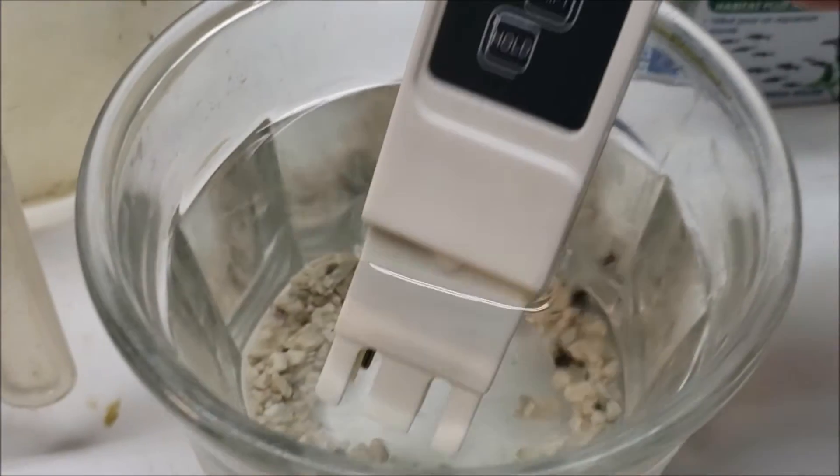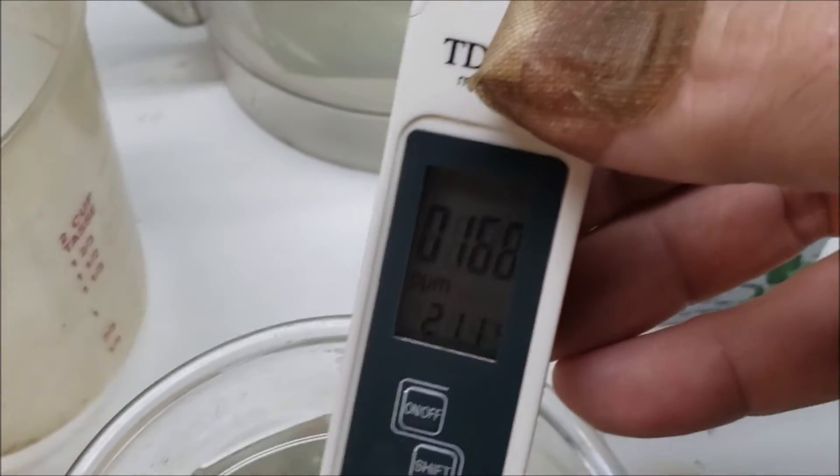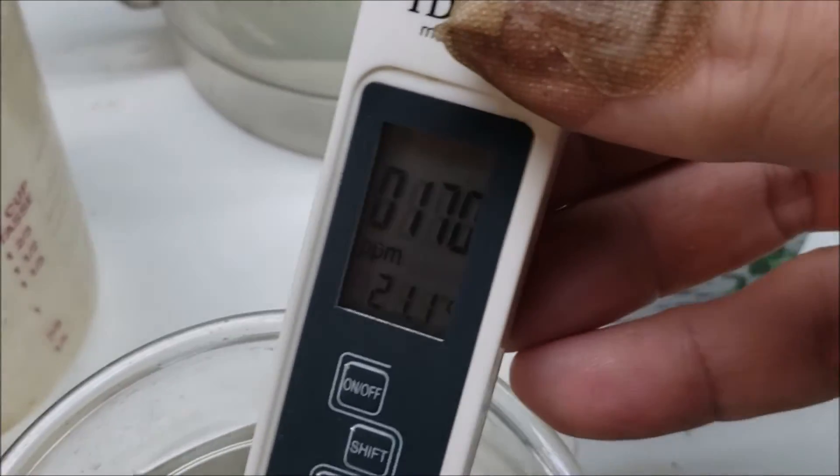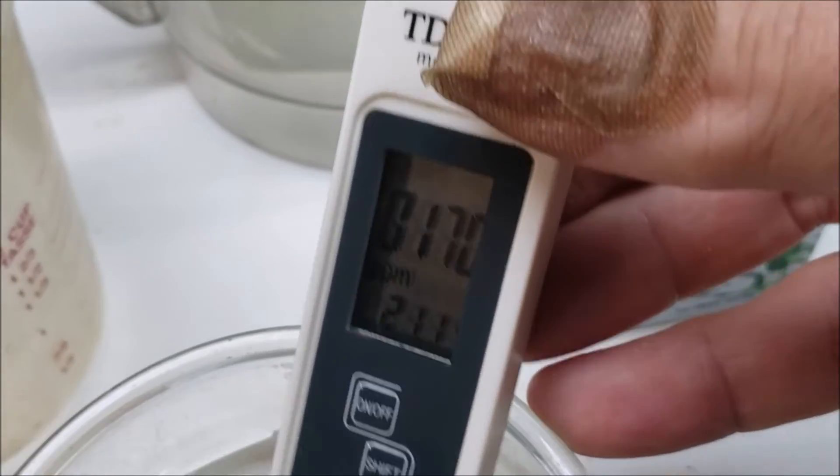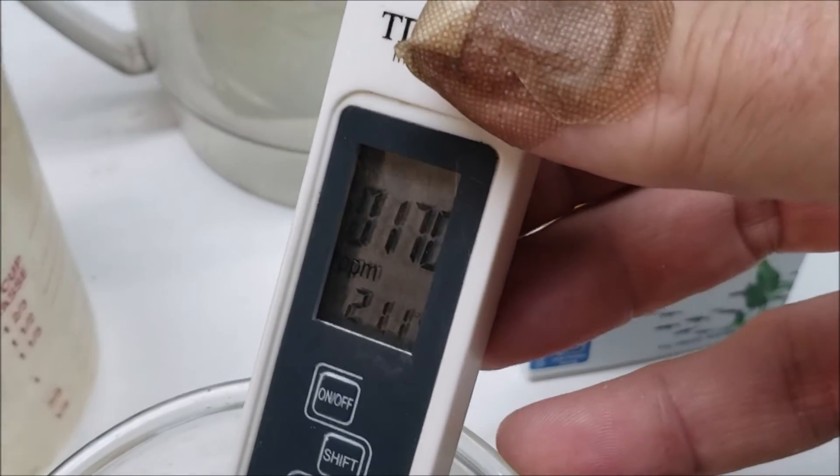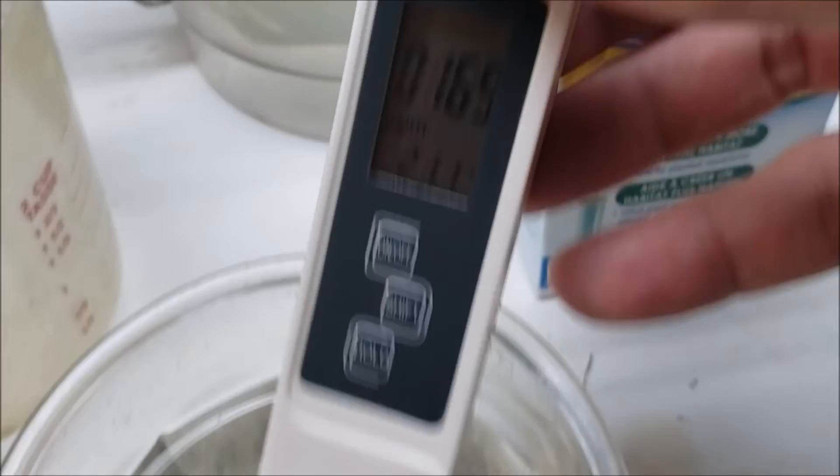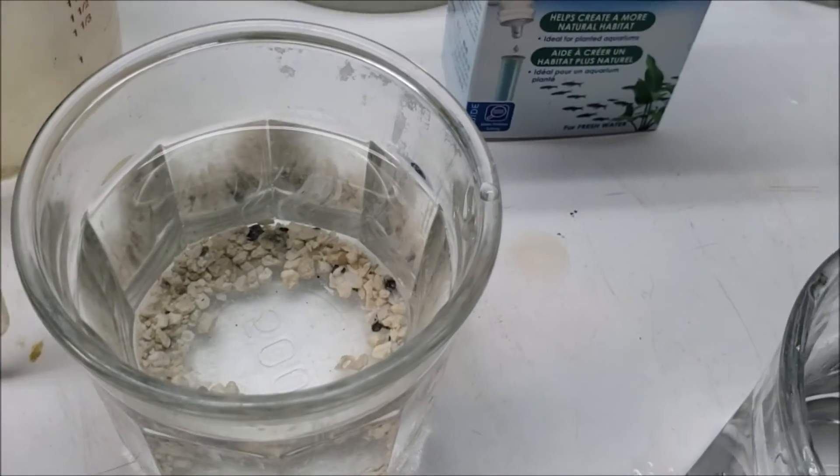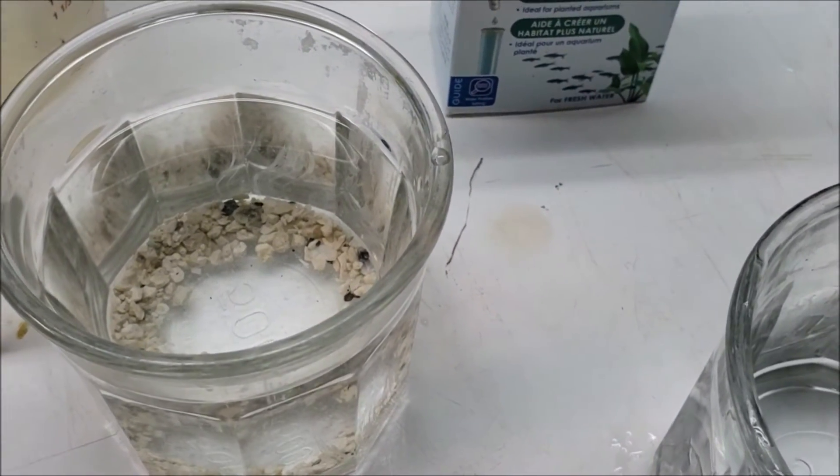This has got aragonite and crushed oyster shell in it, and that's got 170 parts per million. That started out likewise as distilled water a few days ago, so that's one of the little experiments I'm running.